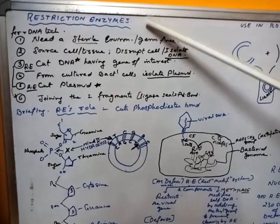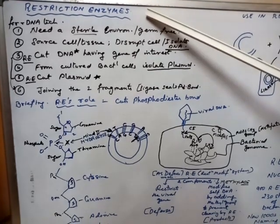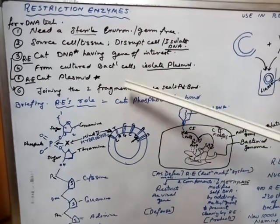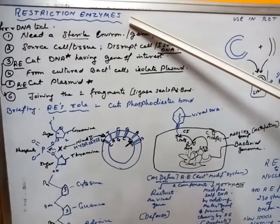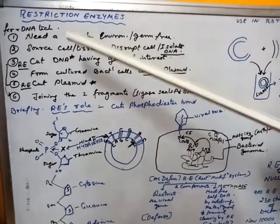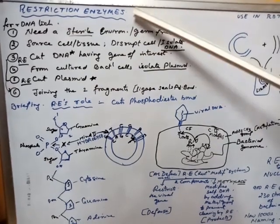This is the most important tool. Without this, recombinant technology would not have been possible. But just before we go with how these restriction enzymes were discovered, where was it found, we would just recap on what exactly does it do, why is it needed.